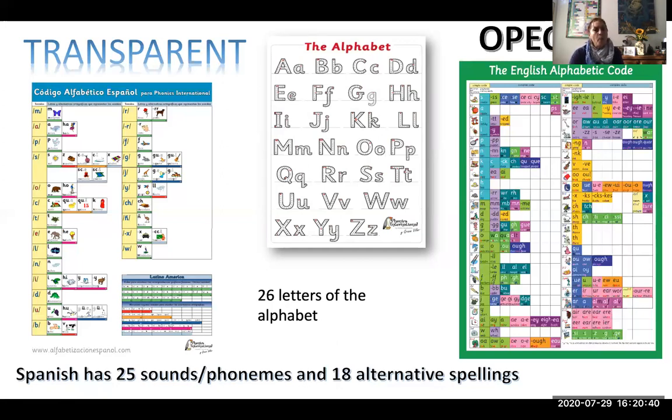English is an opaque alphabetic code, has a complex alphabetic code. And in fact, it is the most complicated code of all languages that use the Roman alphabet. And the main reason why it is complicated is linked to the British history that we already talked about.